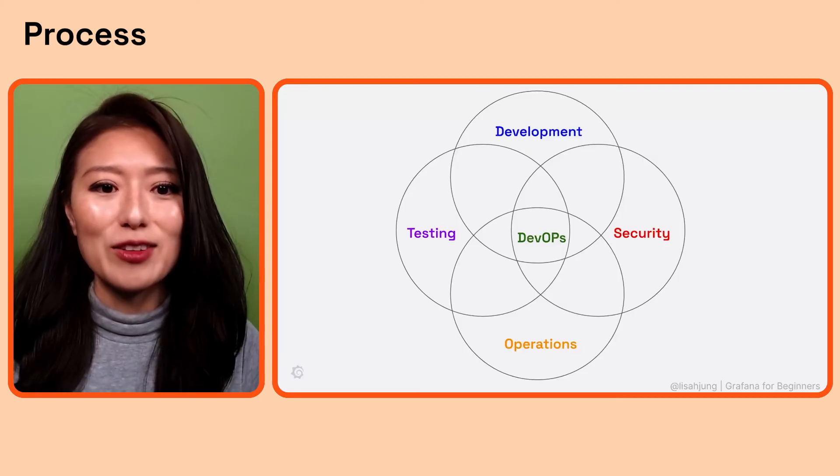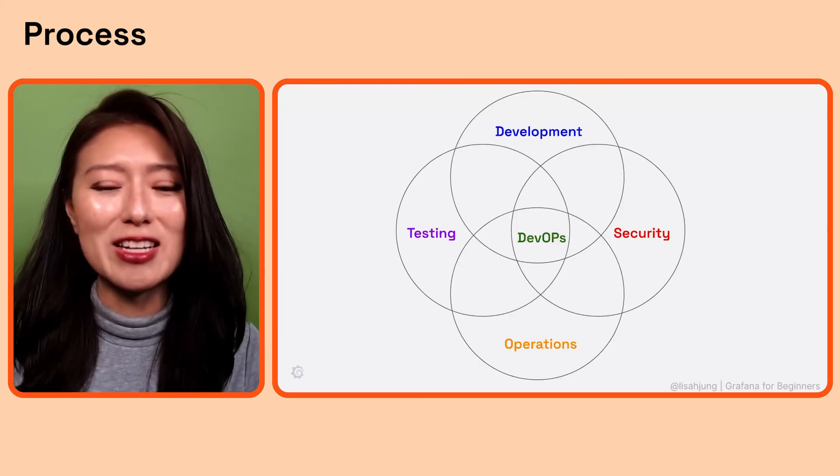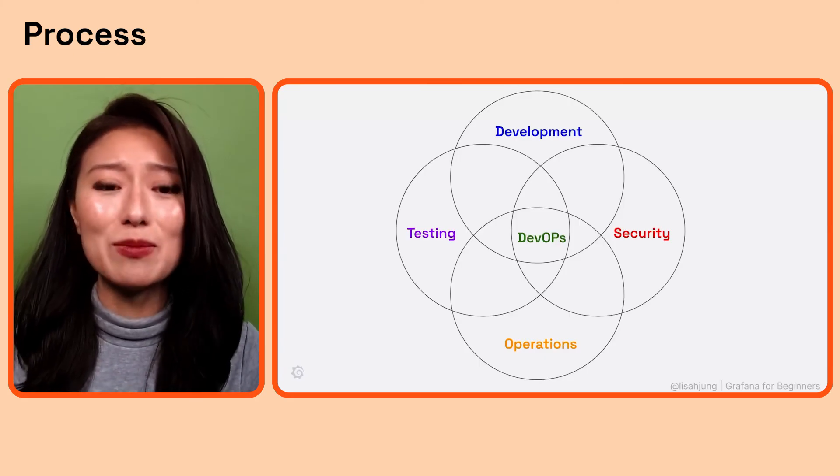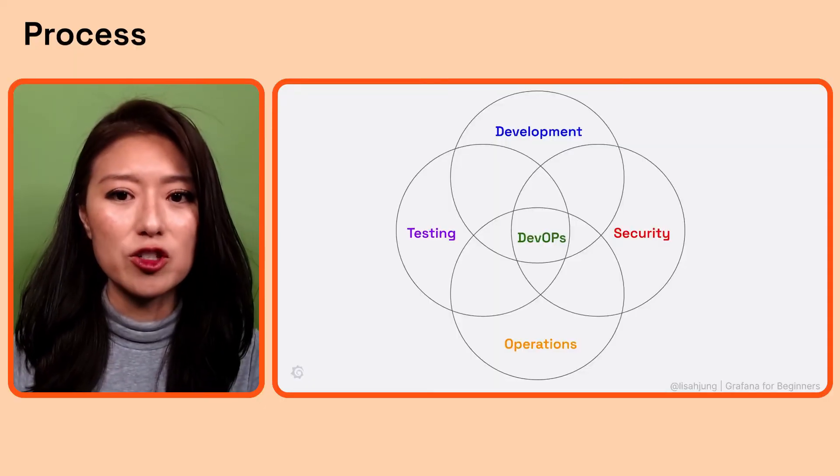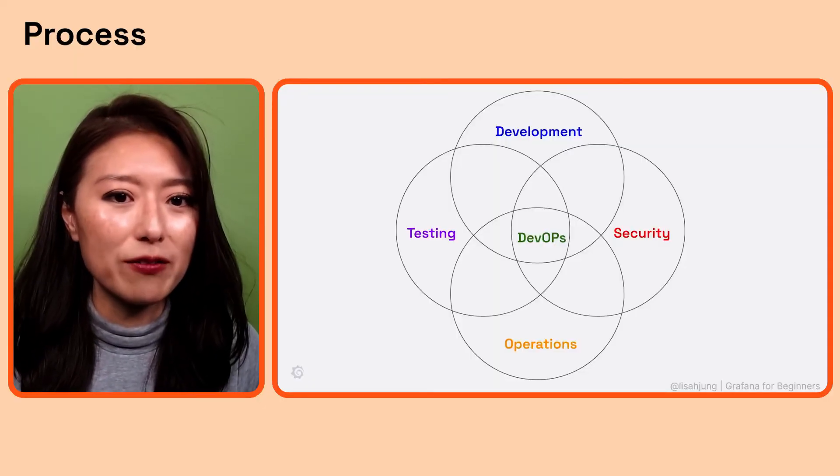DevOps invites everyone to the table at the planning and designing stage of software. The development team, the operations team, the security team, the testing team, and others all come together to look at the workflow as a whole. Some of the questions they may ask are: what are their end goals? What about this process is working? What are the bottlenecks and waste in our workflow? How can we eliminate these to improve the efficiency and time of delivery? All teams chime in to answer these questions and come up with a unified vision.